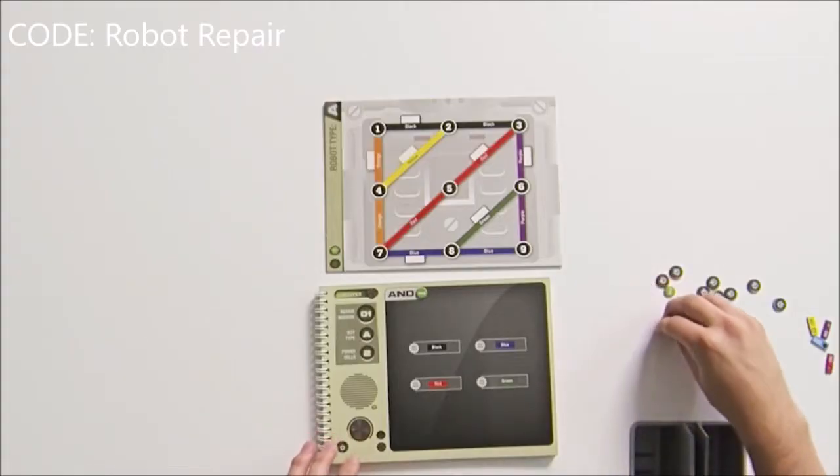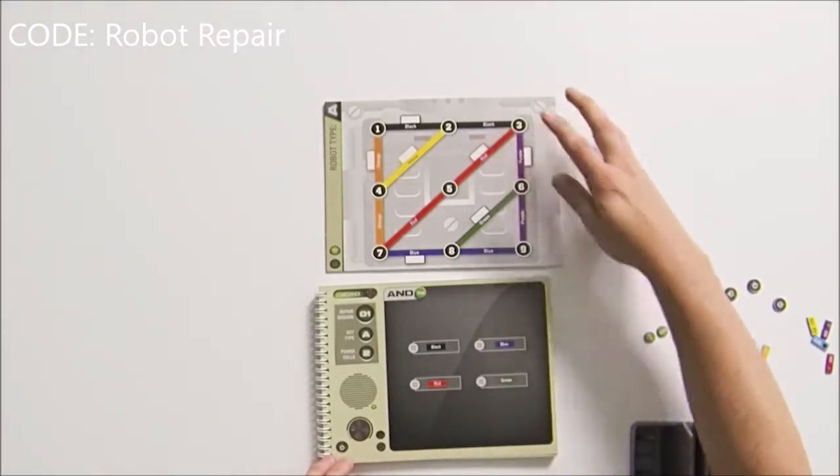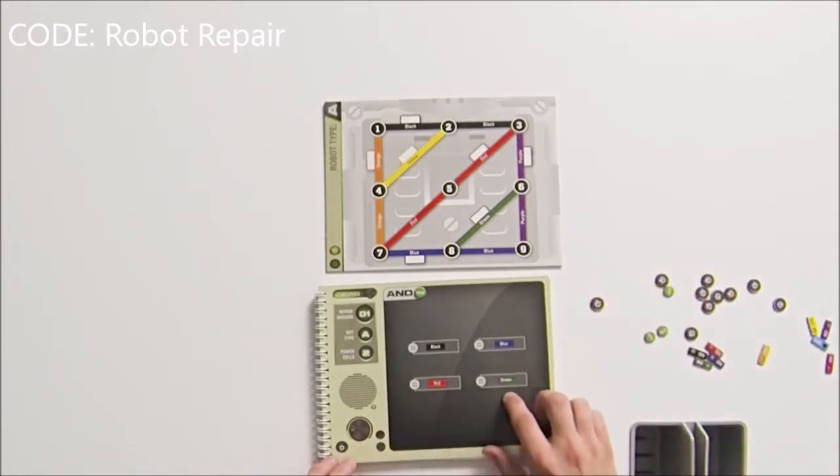So in the case of this challenge, that means that we need the black wire on our circuit board to light up, aka to be touching a power cell, and the same goes for the blue, red, and green wires.